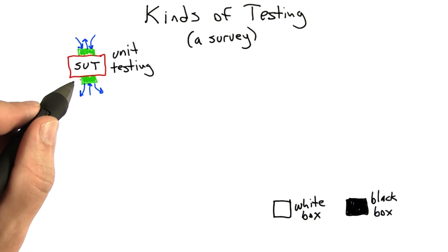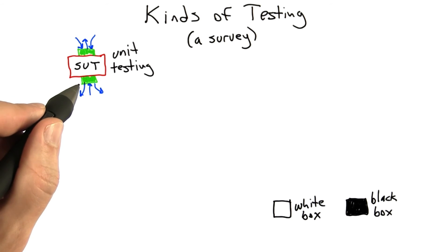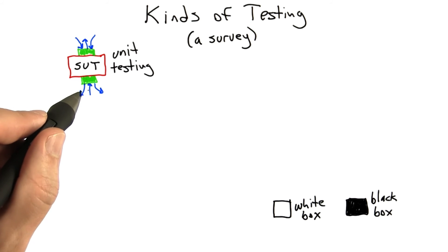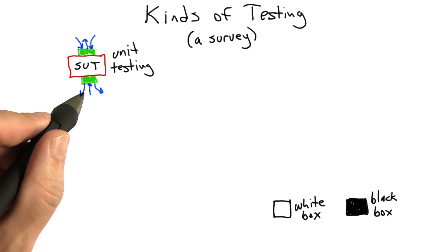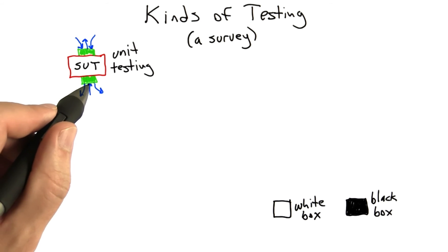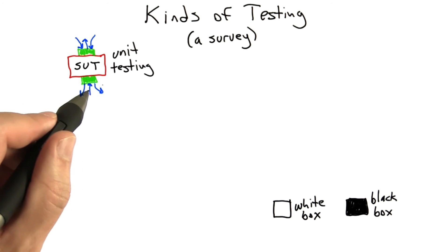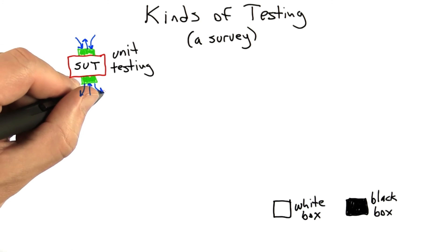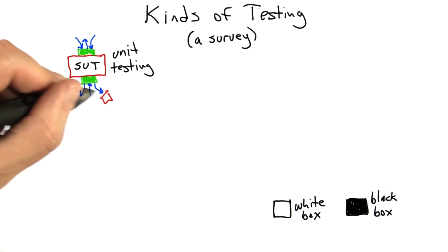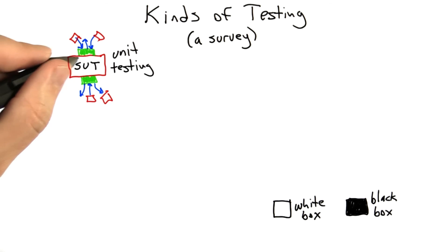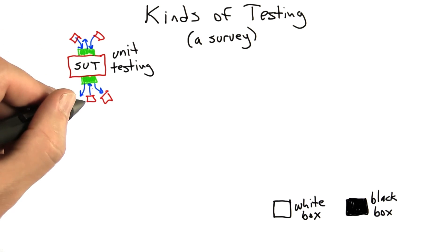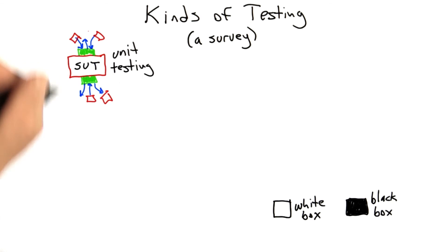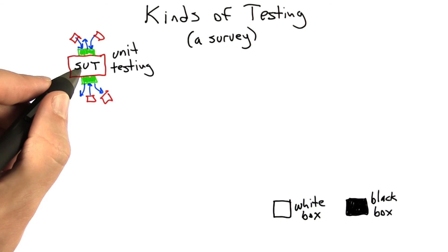Unit testing is also a kind of testing that enjoys a great deal of good tool support. Python in fact has a number of frameworks for unit testing. It also has a number of frameworks for what are called mock objects. Mock objects are fake objects that we can bolt onto the software under test that mock up the behavior of the larger software system in which this unit lives.